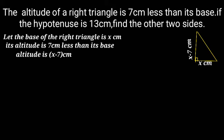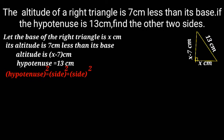The hypotenuse is equal to 13 cm. In a right angle triangle, hypotenuse squared equals side squared plus side squared. Here, the hypotenuse is 13 cm, one side is x, the other side is x minus 7. So, 13 squared equals x squared plus x minus 7 whole squared.